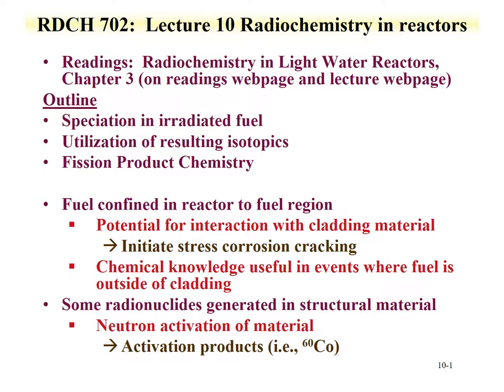If one thinks about krypton and xenon, those are available only as gases. We'll also see that certain elements formed in the fission process form metallic phases. We'll also talk about how the isotopes resulting from fission products can be utilized, primarily in burn-up type calculations, to evaluate how much uranium has been converted into fission products and energy. Finally, we'll describe fission product chemistry, breaking fission products into groups to understand the probability of chemical speciation as fuel is consumed in a nuclear reactor.